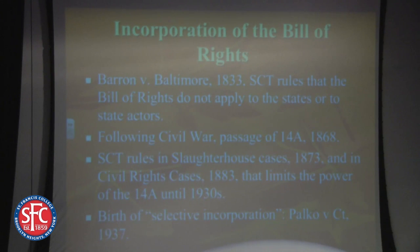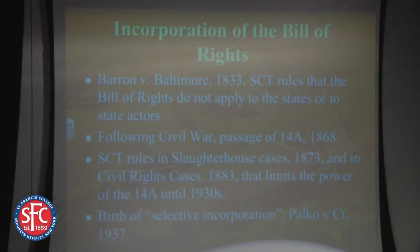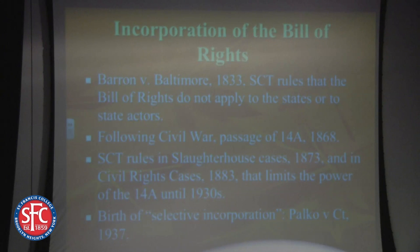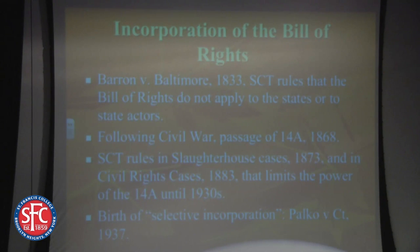The incorporation of the Bill of Rights is a rather complicated thing. The first word of the First Amendment is 'Congress' — 'Congress shall make no law respecting an establishment of religion.' The other amendments do not begin with the word Congress. In 1833, in a case called Barron v. Baltimore, a man named Barron who had property on a bay sued under the Fifth Amendment because the city of Baltimore had interfered with his property. The Fifth Amendment says the government must protect life, liberty, and property with due process of law. Barron felt he lost property without due process, so he sued. The Supreme Court in 1833 said no, you do not have that right.